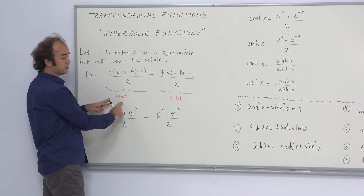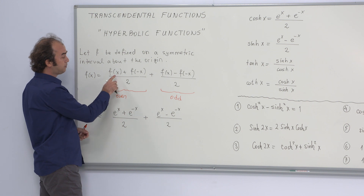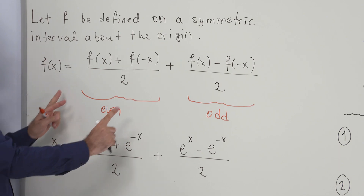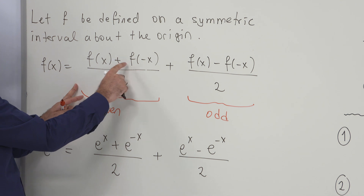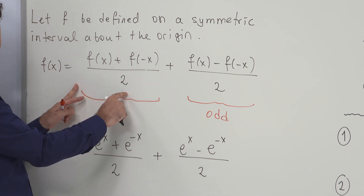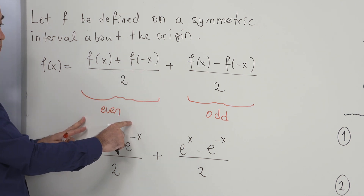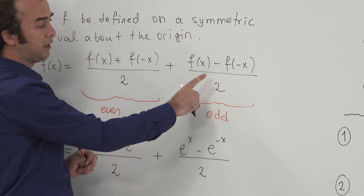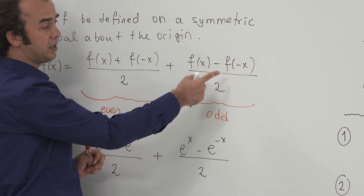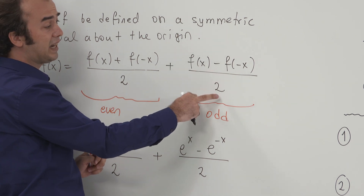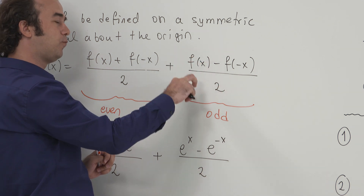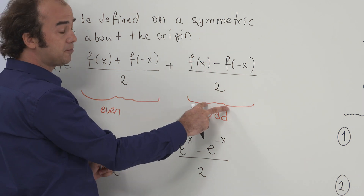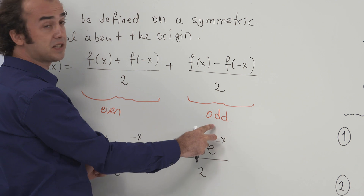In the first part of this sum, if you replace x by minus x, you get the same expression, which means this function [f(x) + f(−x)] / 2 is an even function. If you do the same for the second part of the sum and replace x by minus x, you get minus one times this function, which means the second part of the sum is an odd function.